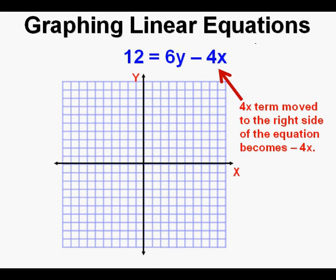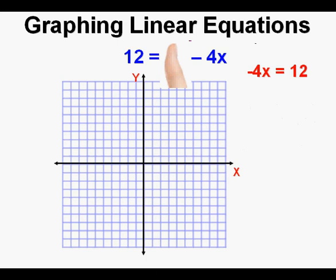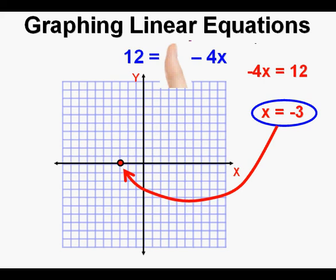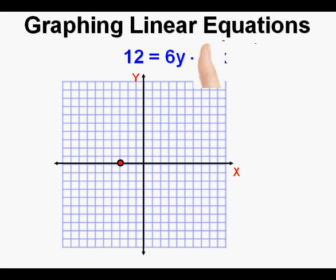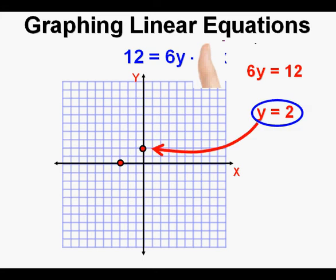We solve for the x-intercept by covering the y-term with our thumb. That leaves us with negative 4x equals 12. We solve for x by dividing both sides by negative 4, so x equals 12 divided by negative 4, which equals negative 3. We mark the x-intercept on the x-axis at x equals negative 3. Covering the x-term leaves us with 6y equals 12. Dividing both sides by 6 gives a y-intercept of 2. We mark the y-intercept on the y-axis at y equals 2.